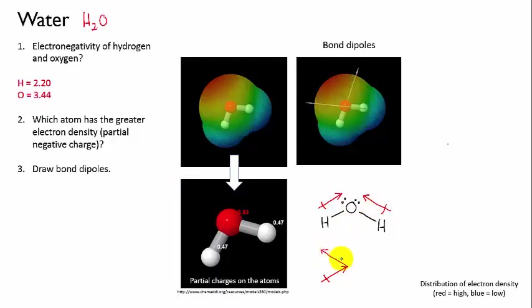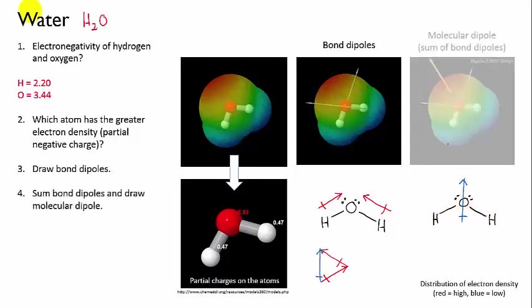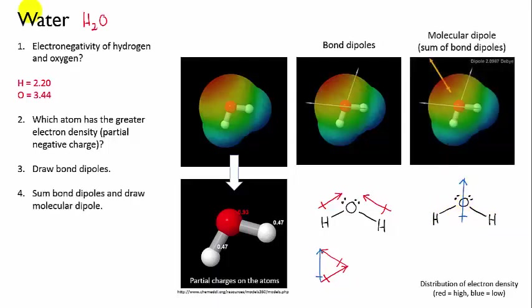If we now sum those two arrows together, we draw an arrow from the tail of one to the head of the other, and we find that the sum of those two dipoles is a dipole that points straight up the page. So we can redraw our water molecule with its molecular dipole that points straight up the page like that, and there's representation from the database. You can see the thick orange arrow here represents the sum of the two bond dipoles.